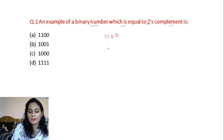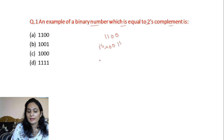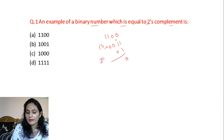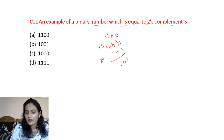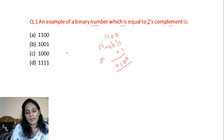For 2's complement, we will start with the 1's complement first. The 1's complement is 0011. When we compute the 2's complement, we add 1. We get 0100 with carry over. This means that Option A is not the answer, as the result does not equal the original number.